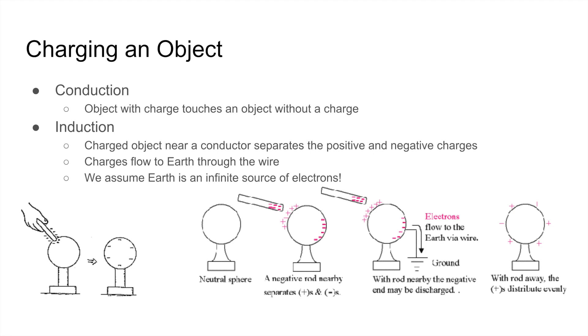The other method of charging an object is through induction, and that means that there's no contact. So when a charged object is put near a conductor, in this case it's a negatively charged object, the positive charges will tend towards the side with that negatively charged rod, while the negative charges will move away. Now if we connect a wire from the sphere into the ground, the electrons from the far side of the sphere will flow to the Earth through the wire.